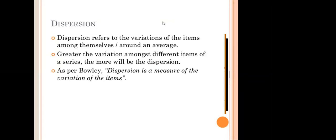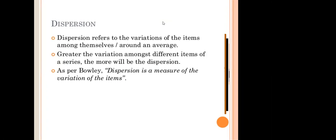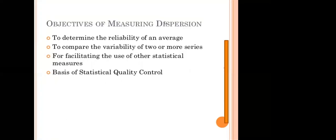Dispersion is a measure of the extent to which the individual items vary. Basically, dispersion helps us to study the variability of items — that is, the extent to which items vary from one another and from the center value. Now, some objectives of the measure of dispersion.